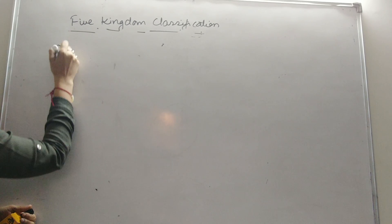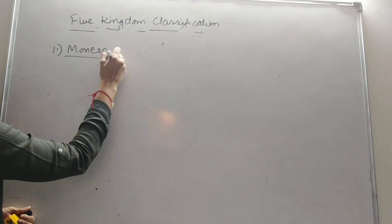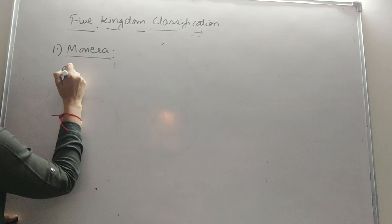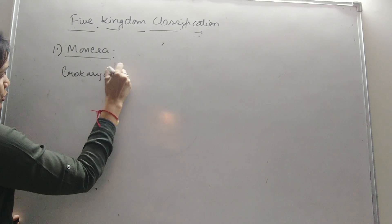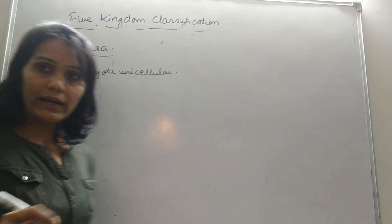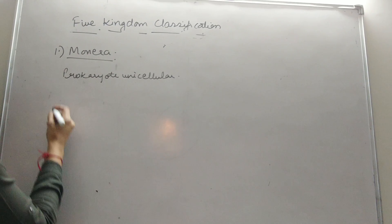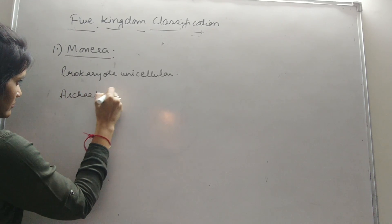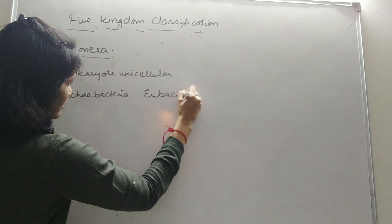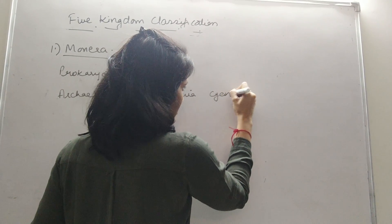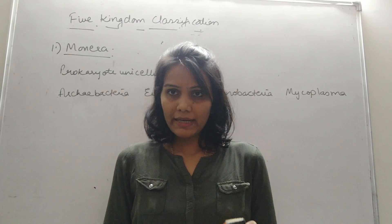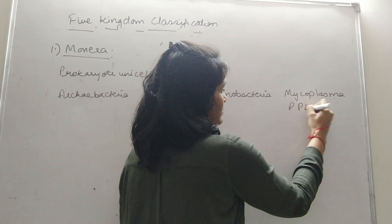Let's begin our journey into the five kingdoms. The first is Monera. They include unicellular prokaryotes — well-defined nucleus is absent and they are made up of one cell. Monera includes archebacteria, eubacteria, cyanobacteria, and mycoplasma. Mycoplasma is also called PPLO — pleuropneumonia-like organisms.